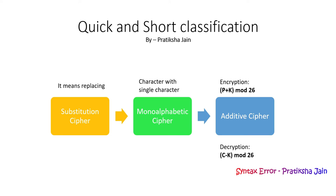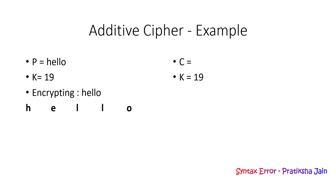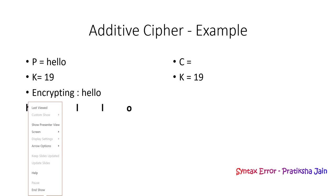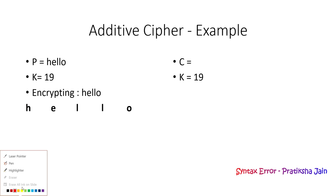Let us go through an example where I have considered plain text as 'hello' and key as 19. We will get the cipher for 'hello' with the same key 19. Since it is a symmetric key, both the sender and receiver use the same key.